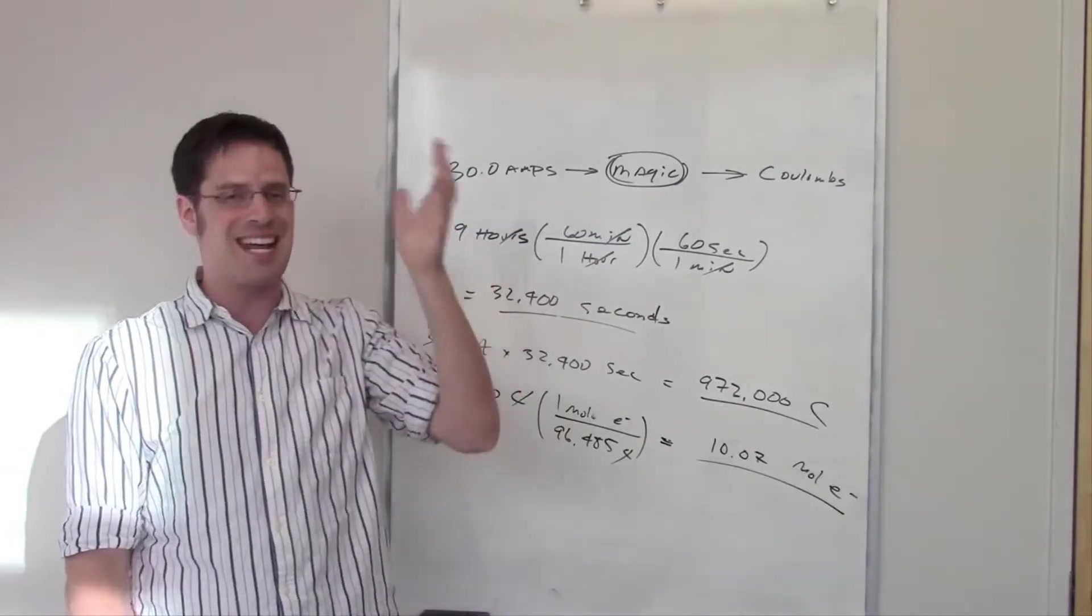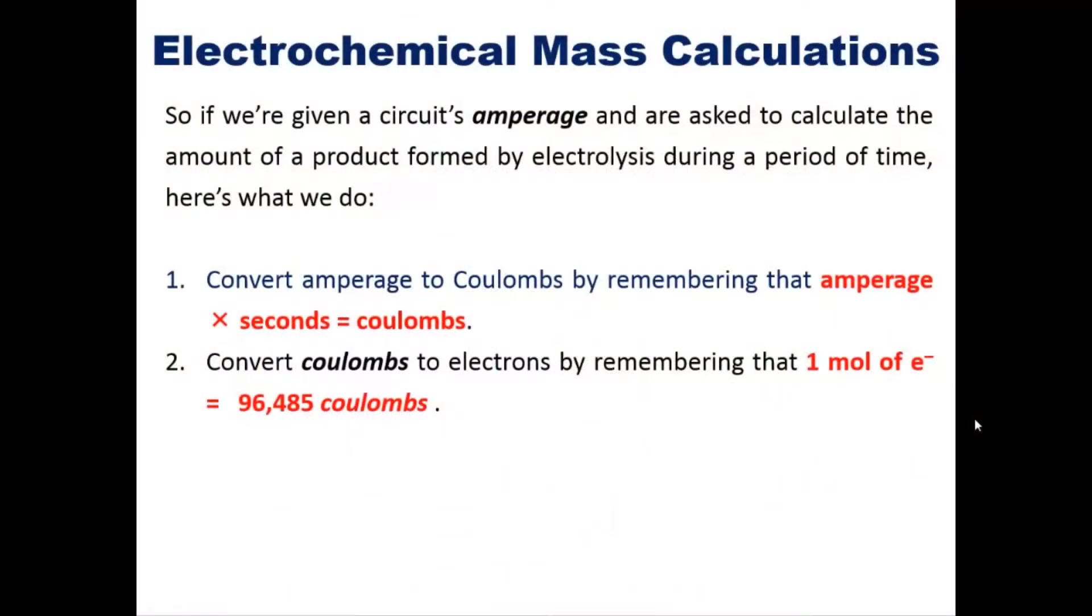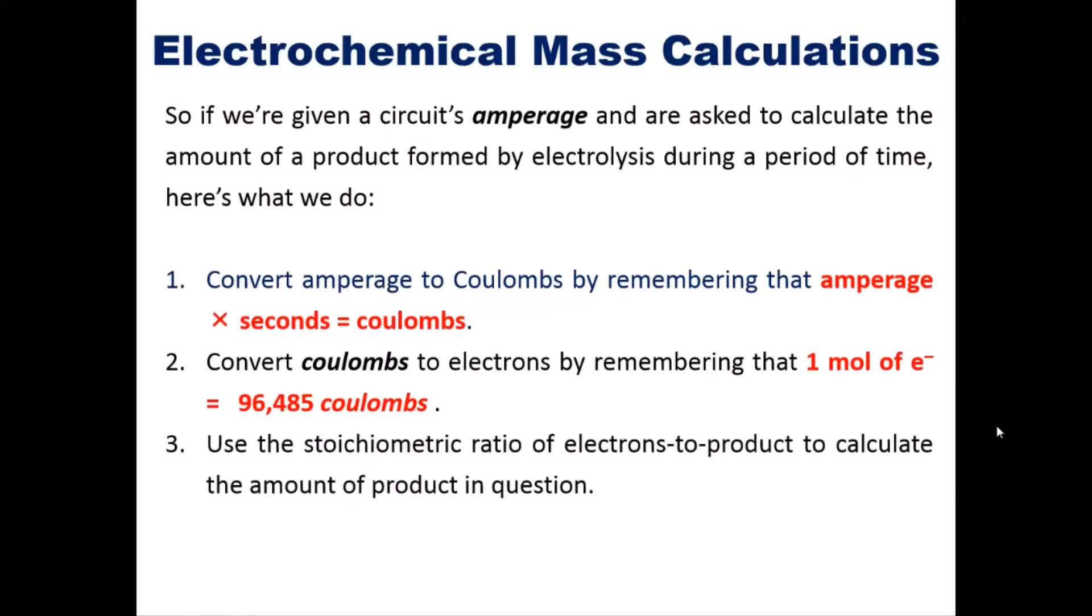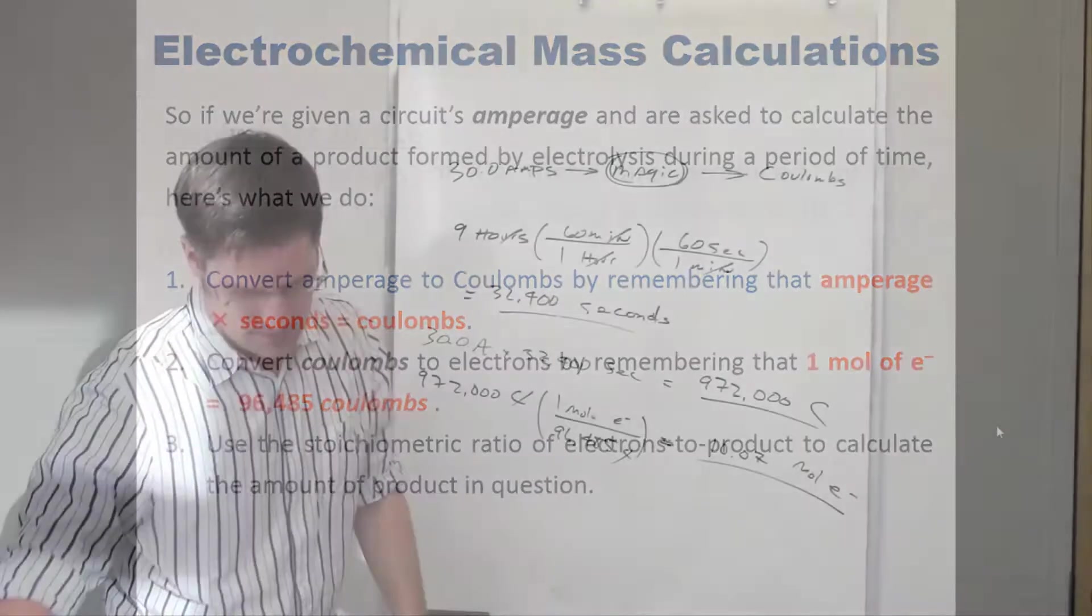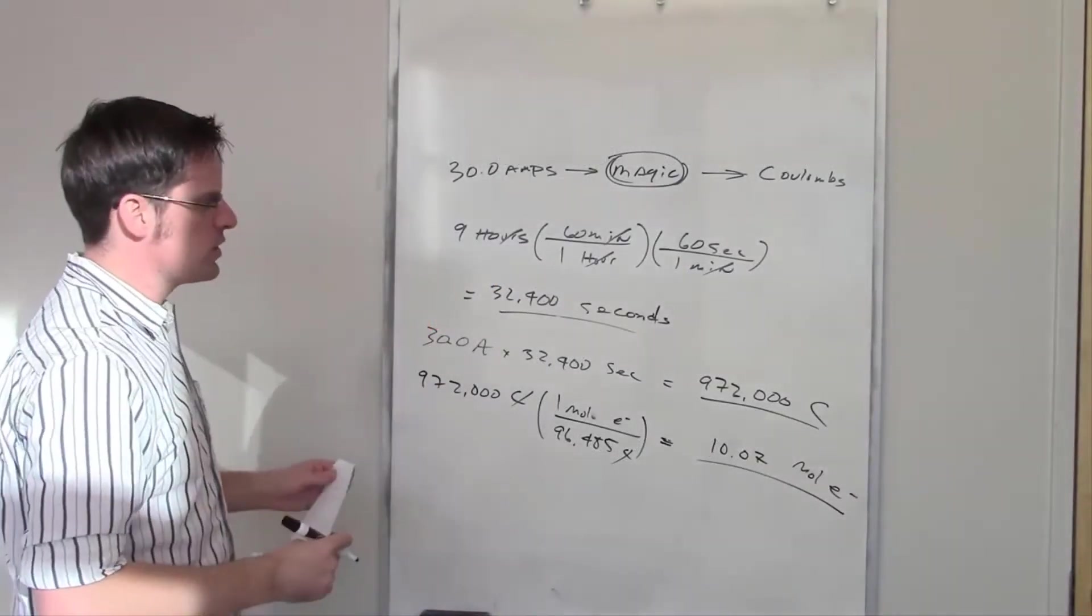So we've now done step two of this process. Now we'll go back to the PowerPoint slide and see what the next step is. Step three says: use the stoichiometric ratio of electrons to product to calculate the amount of product in question.